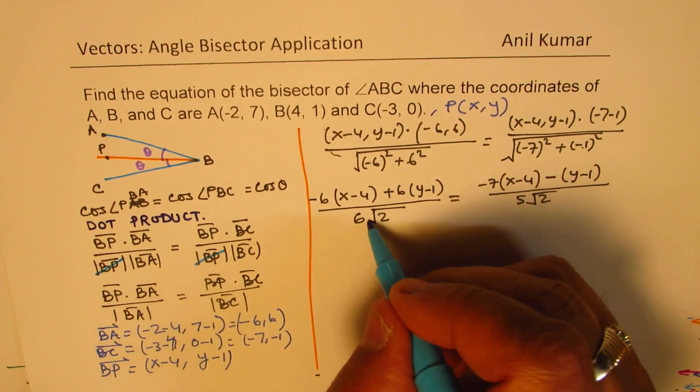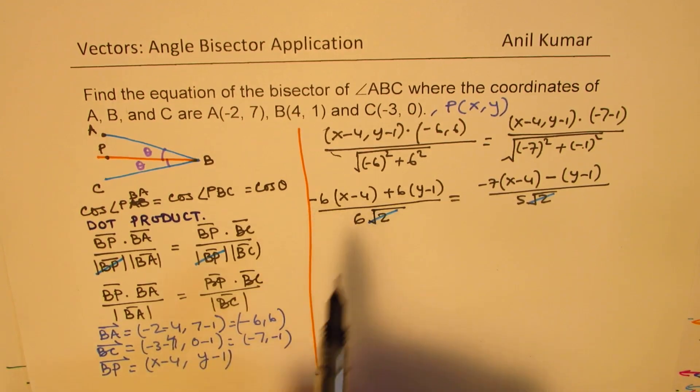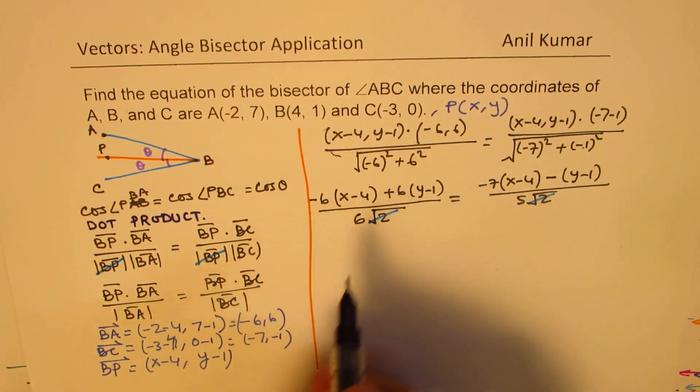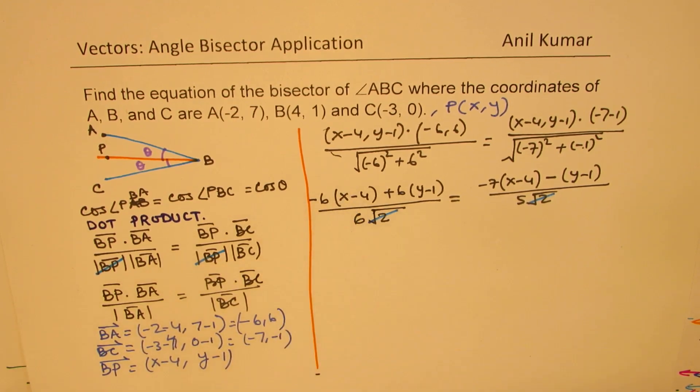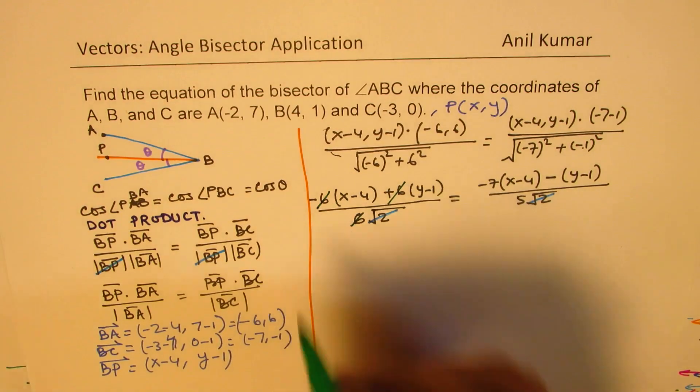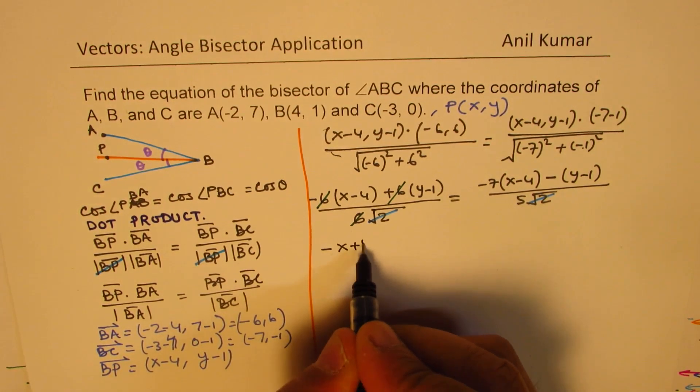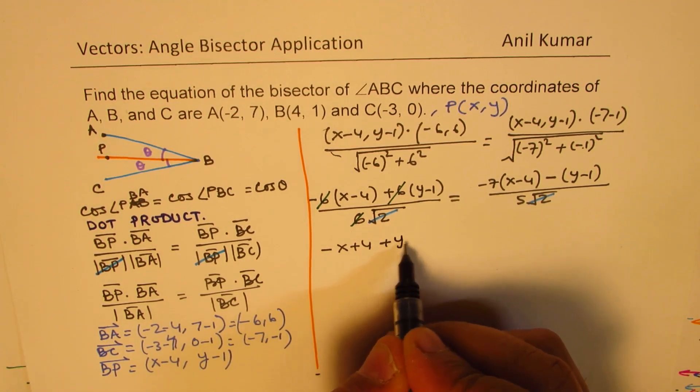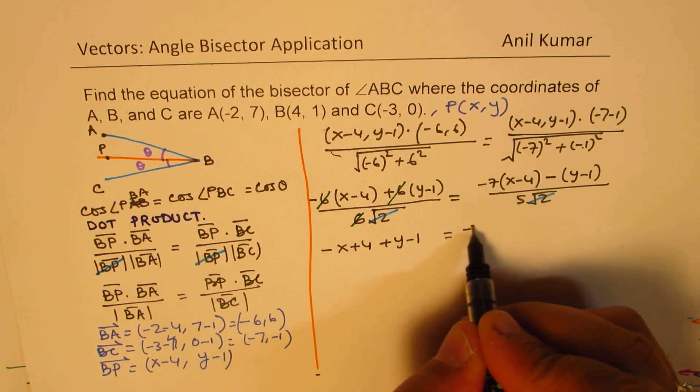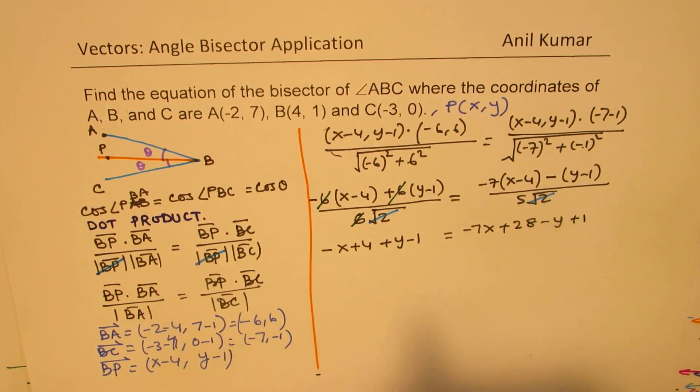Okay, now, √2, √2 will cancel. Okay, let's multiply this. Well, 6 is a common factor, 6 is a common factor, so 6 can also be cancelled. So, we are left with -x + 4, here we have + y - 1 equals to. Let's expand this, -7x + 28 - y + 1.